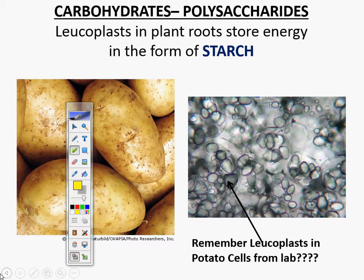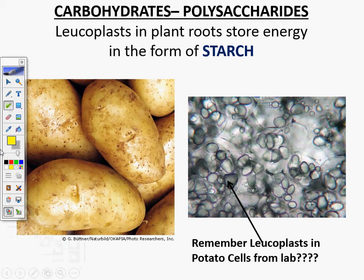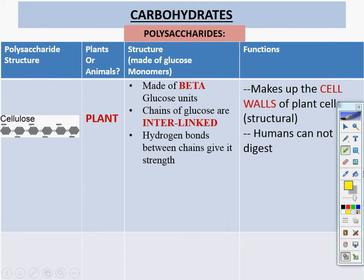Leukoplasts in plant roots store energy in the form of starch — remember those leukoplasts we saw in the lab. Next, cellulose. Cellulose is found in plants and is made of beta glucose units. So alpha is for starch, beta is for cellulose. The chains of glucose are interlinked with hydrogen bonds between them, giving them strength. It makes up the cell walls of plant cells and is structural. Humans cannot digest cellulose — it's great for cleaning out your intestinal tract; the more roughage you eat, the better.